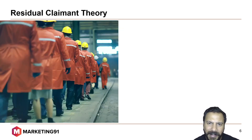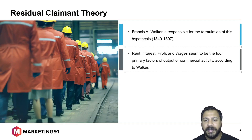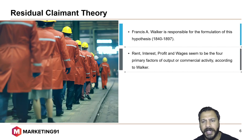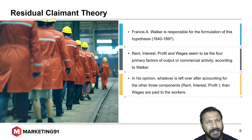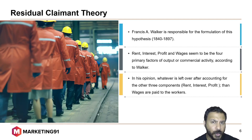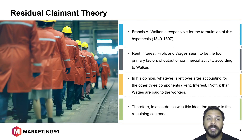Moving on to the next, the residual claimant theory. Francis A. Walker was responsible for the formulation of this principle. Rent from the land, interest paid to banks, profit made from the company, and wages paid to labor are the four primary factors of output or commercial activity according to Walker. In his opinion, whatever is left over after accounting for the other three components — paying rent for the land, interest to the bank, and profit for the entrepreneur — is what is paid as wages to the workers. Therefore, in accordance with this idea, the worker is the remaining contender, or the residual claimant.